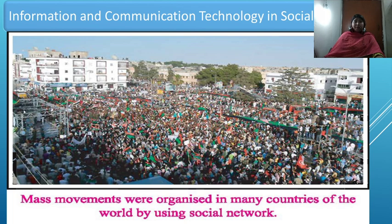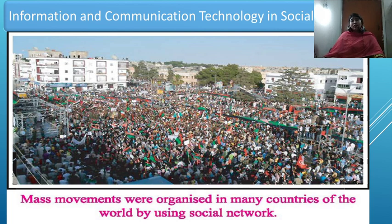Here is a picture showing that mass movements were organized in many countries of the world by using social networks. People from all over the world gather — how do they get the information? Only through social networks. By social networking websites, they communicate and share their feelings. After sharing their feelings, they gather at the same point and carry out their movements. This is one of the most important parts of social networking.